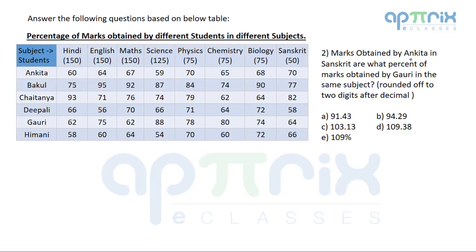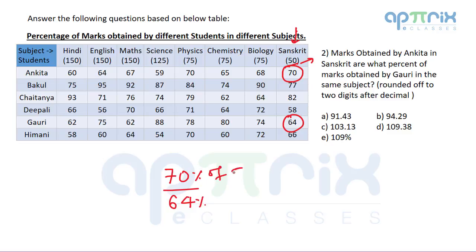Question 2 asks: marks obtained by Ankita in Sanskrit are what percent of marks obtained by Gauri in the same subject? Since both values are in the same subject column, they share the same base. We need to find what percentage 70 (Ankita's Sanskrit percentage) is of 64 (Gauri's Sanskrit percentage). The base cancels out, so it reduces to finding 70 as a percentage of 64.